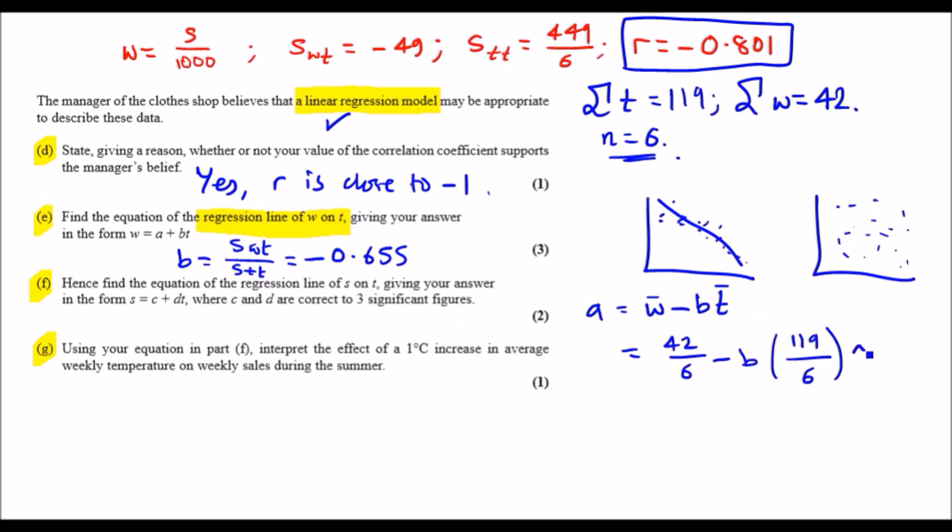And well, you get an answer which is pretty much close to 20. So you could even say about 20.0 to three significant figures. That's what they do in a mark scheme generally speaking. And yeah, I think that's really it. So we've done E now. So this means that if I was to write the equation formally, it would be W equals A, which was about 20.0, minus 0.655T.